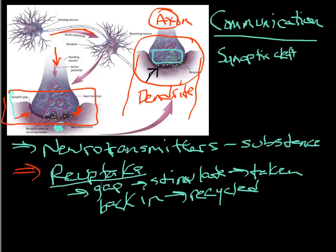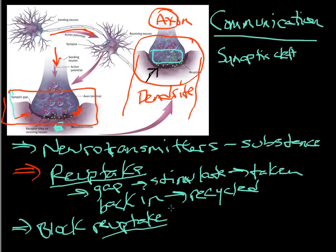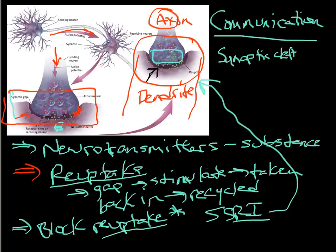The transmitters are sent across the gap, they do their job, and then they are taken back up. This reuptake process, we will see at a later point, involves some drugs that actually block reuptake so that the neurotransmitter is in the gap longer. Therefore, it stimulates the signal that much longer. This is key to remember. There are some drugs we refer to as SSRI. I won't describe the SS part just yet, but RI is reuptake inhibitor.